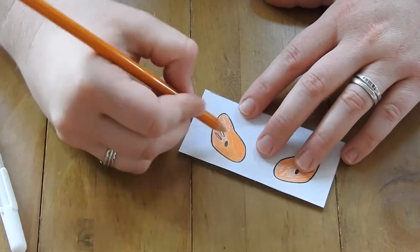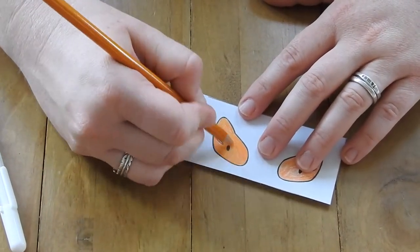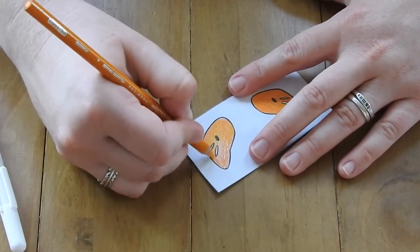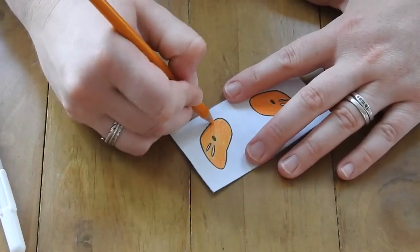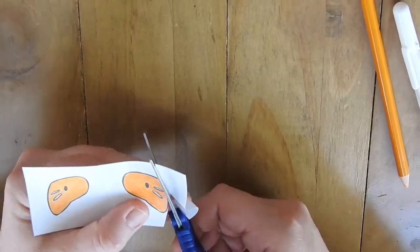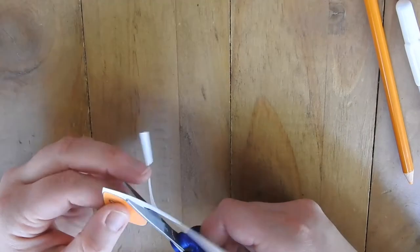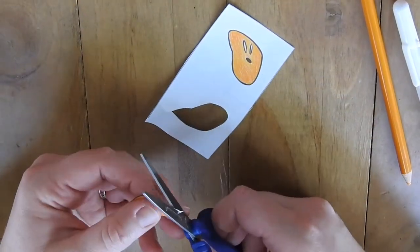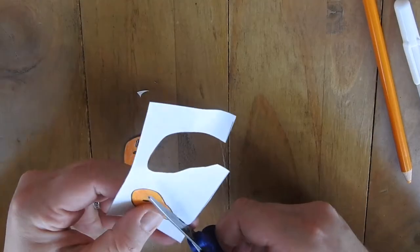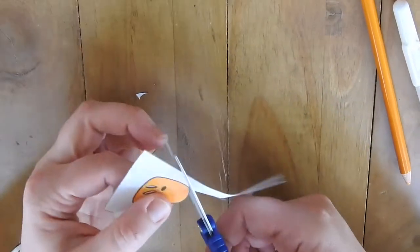Now you cut him out, nice and easy. You have to make sure to color both sides because you're going to end up gluing the two of them together and you want to be able to see his face on both sides.